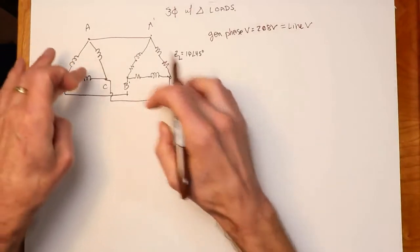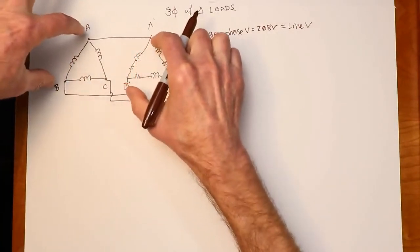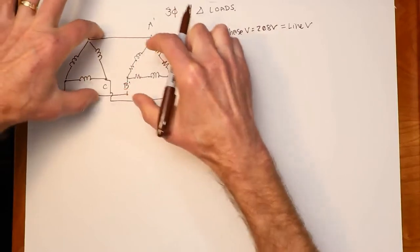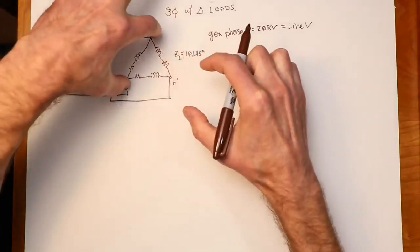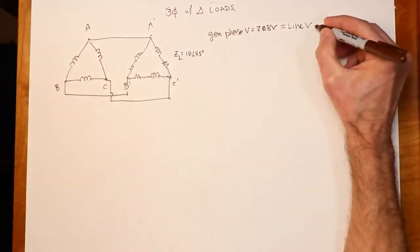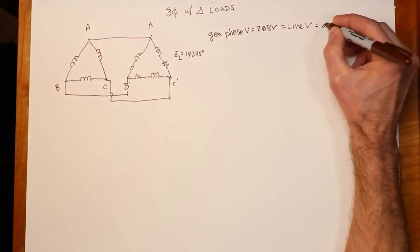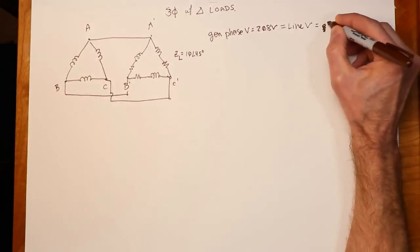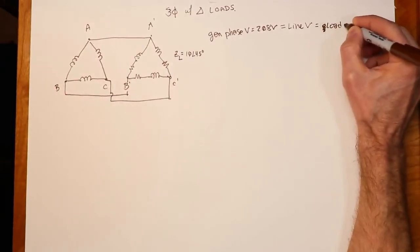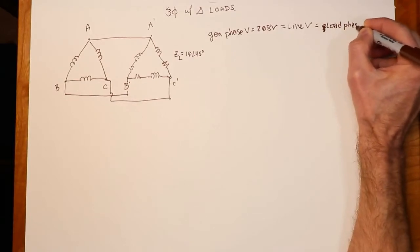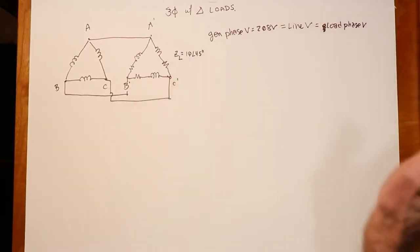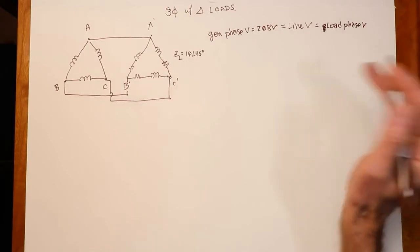So where do we go from there? What's consistent in this configuration? Well, when we have a delta configuration, then the phase voltage is the same as the line voltage. So I know what the line voltage is. Now, in this case, because it's delta to delta, it would be apparent that the generator phase is the line, is the load. So this also equals the load phase voltage. So they're all 208. Everybody's 208.